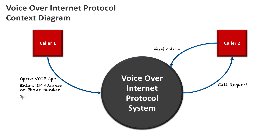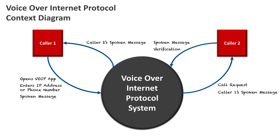Once Caller 2 verifies and accepts, Caller 1 can start speaking — their spoken message goes into the system. The system digitizes it and sends it over the internet to Caller 2. Caller 2 then speaks back with their own spoken message, which gets sent back to Caller 1. That cycle continues as long as they're having a conversation through the VoIP information system.